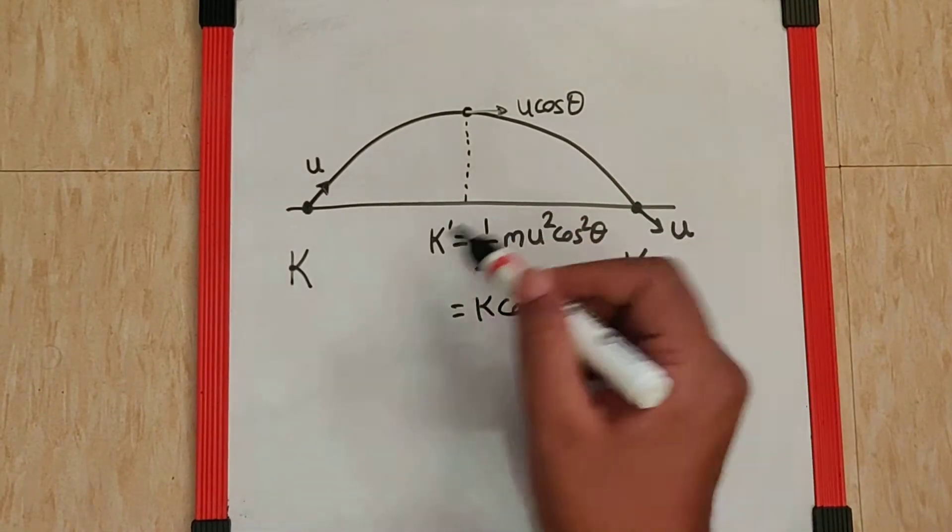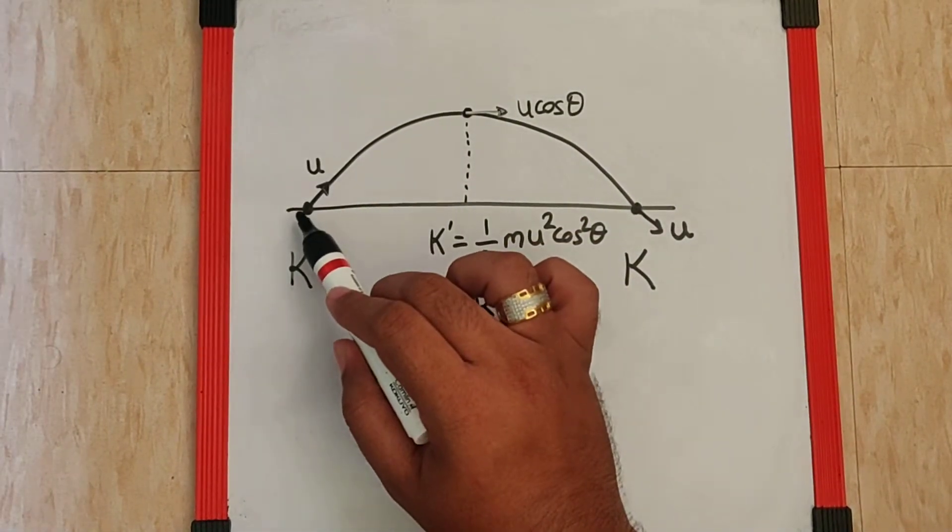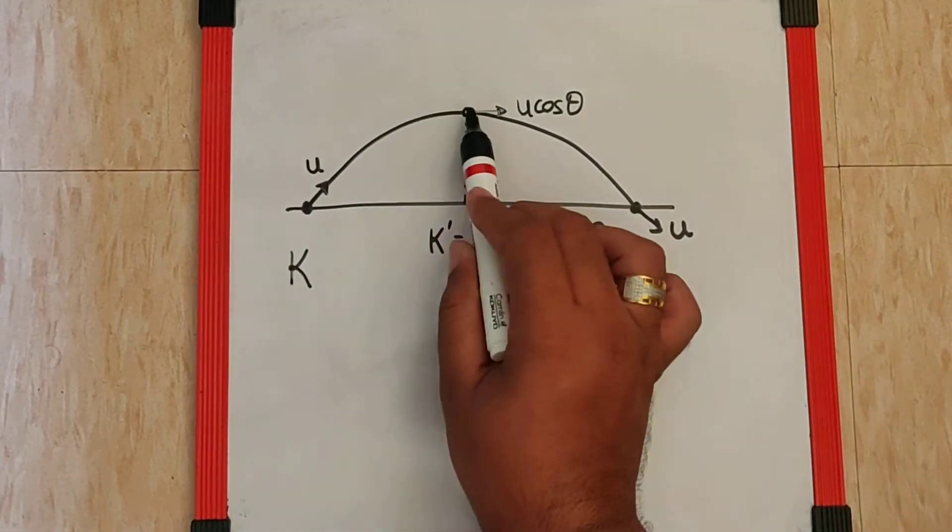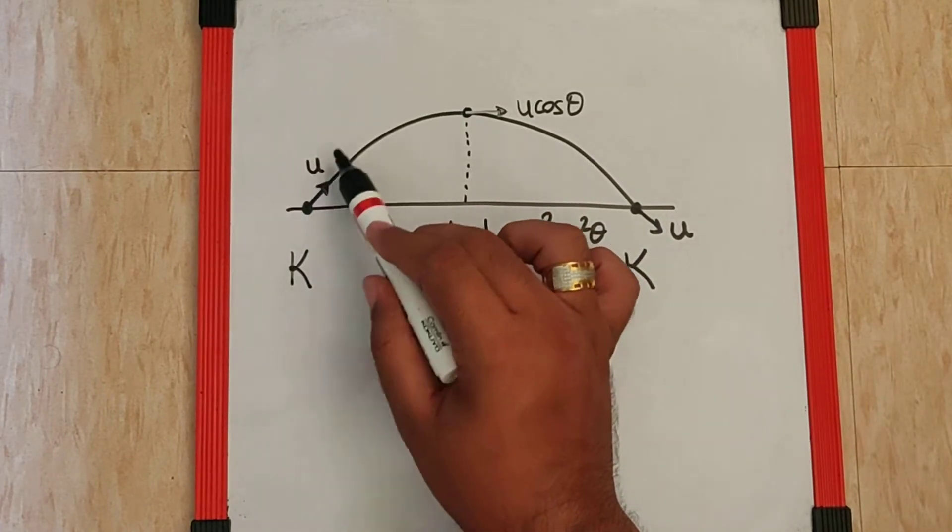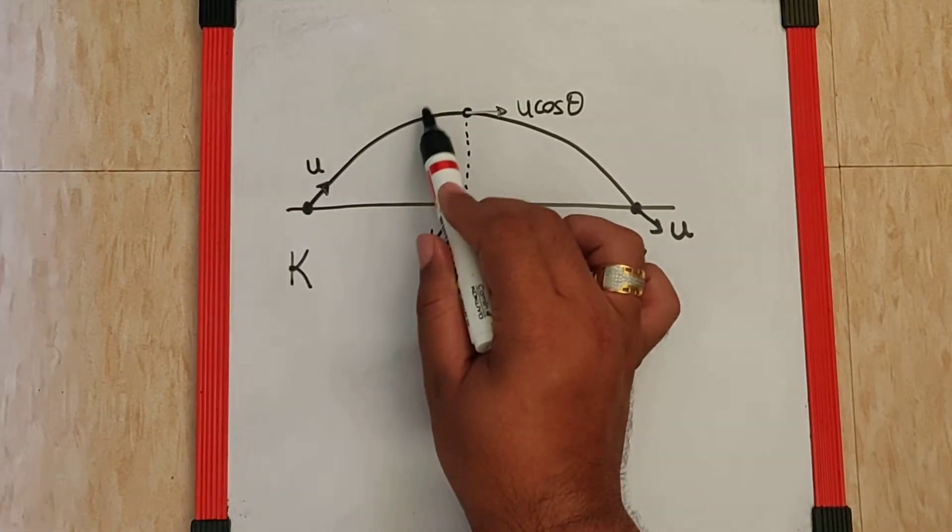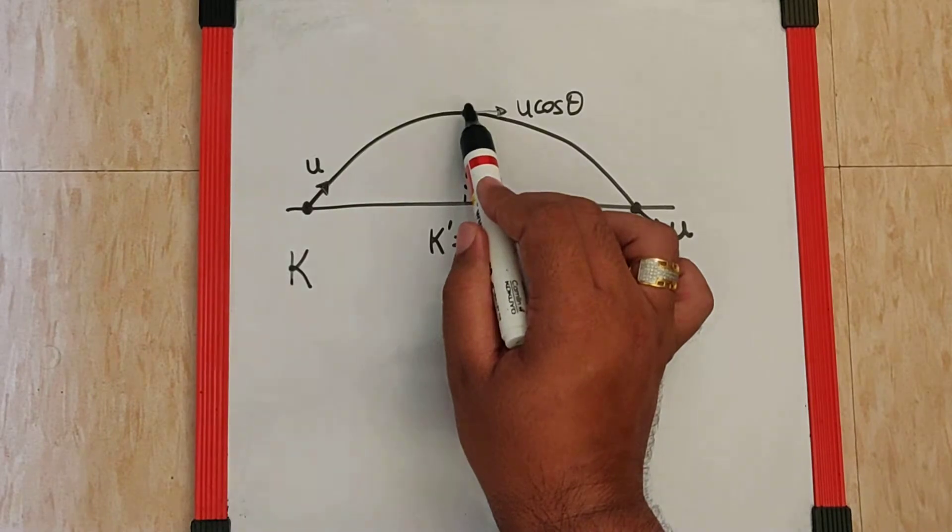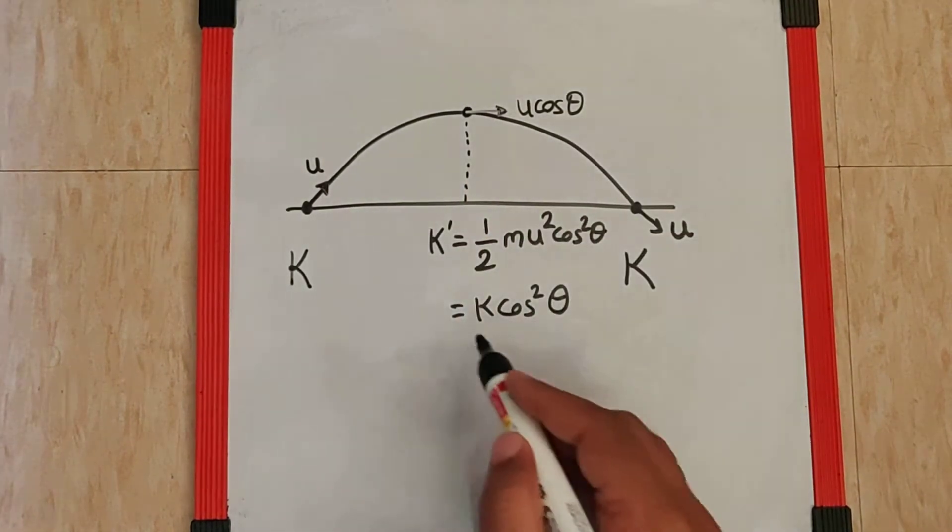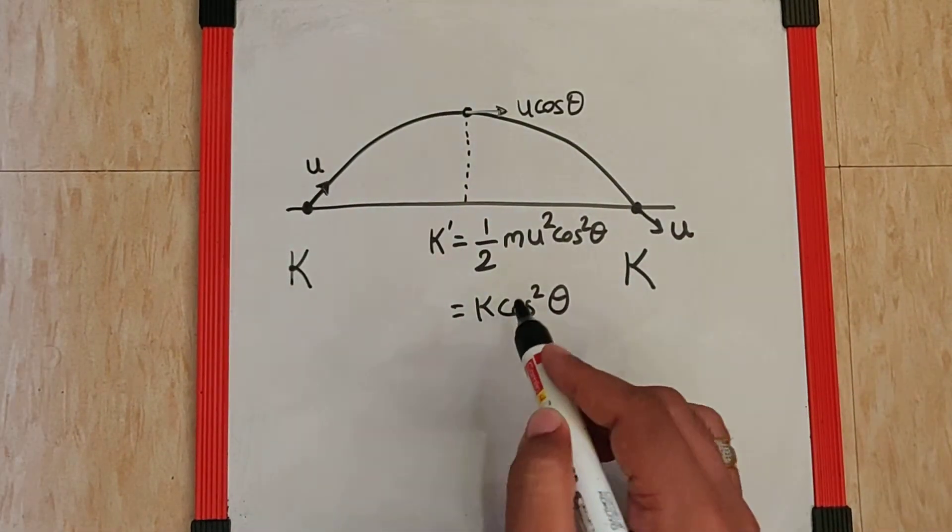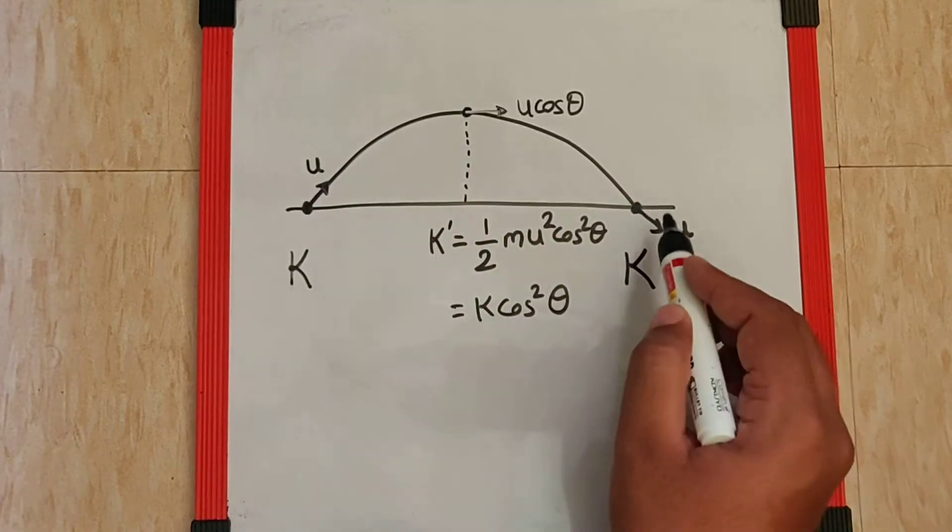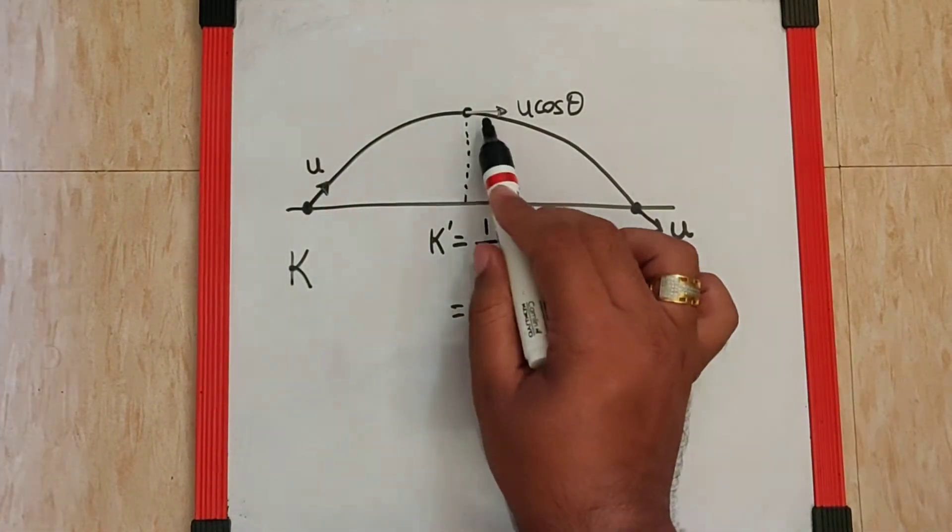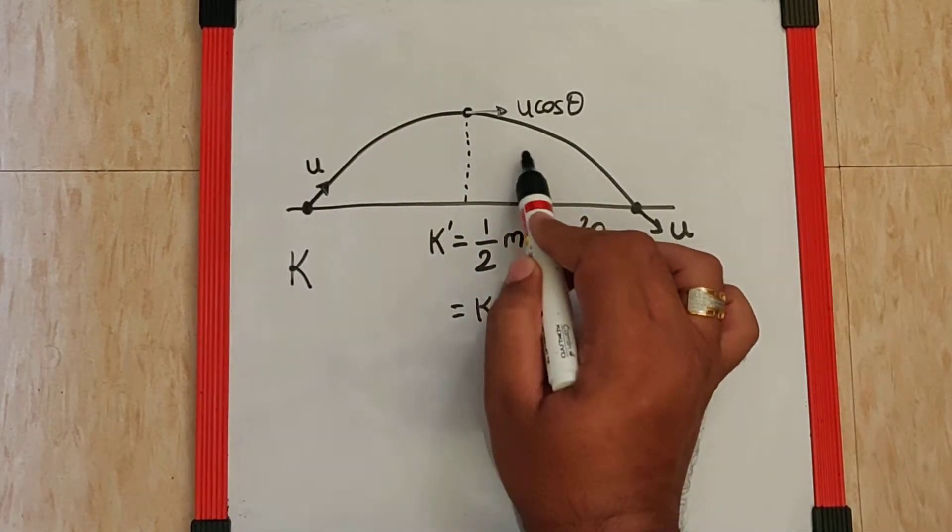Now, what you need to understand is as the body reaches the maximum height, the vertical component of the velocity goes on decreasing, which becomes zero at this point. So K' is the minimum value possible in the entire path because in the other half, the vertical component of the velocity again